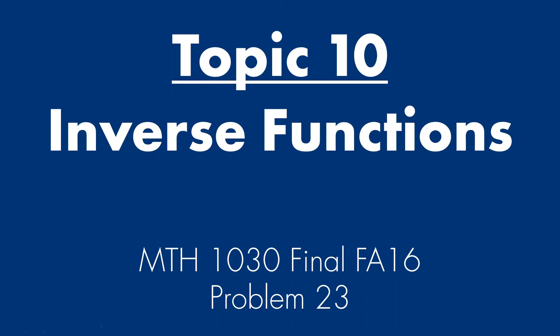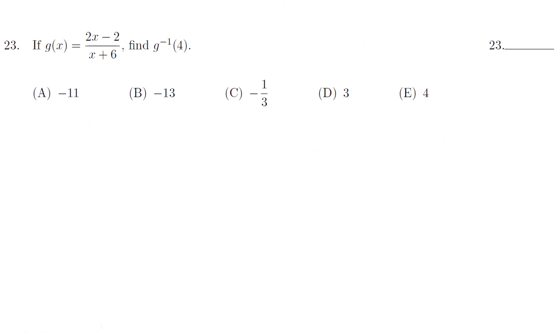Last but not least, inverse functions. Problem 23 from final FA16. All right? So we got g of x equal 2x minus 2 over x plus 6. We need to find the inverse at 4. So what I would do immediately, I would say y equals 2x minus 2 over x plus 6. And I would flip it. x and y's. x equal 2y minus 2 over y plus 6. This is x over 1. Let me multiply it. Do the butterfly method.